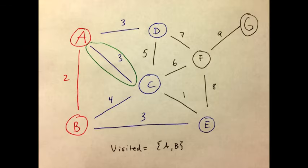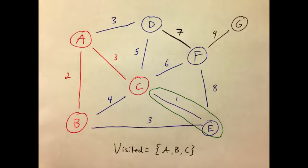I've chosen to add A, C. Continue in this manner, each time picking the smallest edge that connects to an unvisited node.